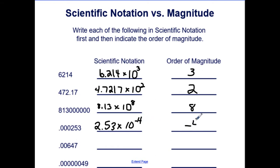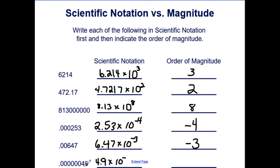The next number would be 6.47 times ten to the negative third, making the order of magnitude negative three. And here we would have 4.9 times ten to the negative seventh. With all of these in scientific notation, I'm using my four steps: moving the decimal point, removing the unnecessary zeros, and finding the order of magnitude.